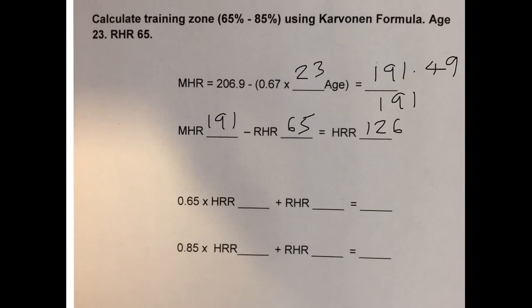They're going to train between 65 and 85%. So 65% is the same as 65 over 100 which is 0.65. So 0.65 times the heart rate reserve of 126 plus the resting heart rate of 65 gives you an answer of 146.9, and we can round that up to 147 beats per minute.